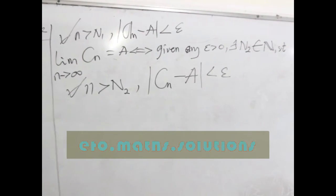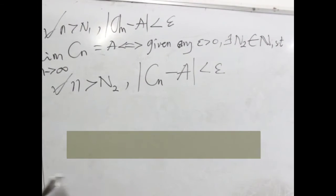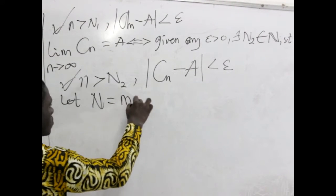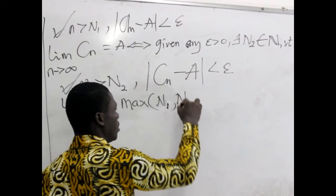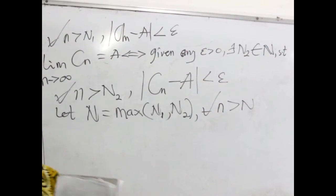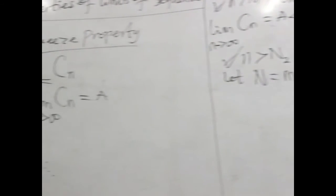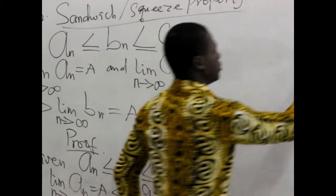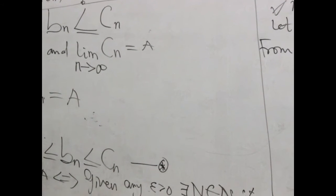We are having N₁ and N₂, so we want N to be the maximum of the two. We say that let N equal the maximum of N₁ and N₂. So for all small n greater than N, having done that, we will come back to our star. We have labeled this star because we want to use it.